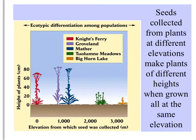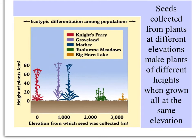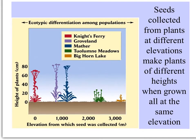If you take seeds from plants at different elevations and bring them to a common garden as Thurisen did, they make plants of different heights. On the x-axis is the elevation from which the seed was collected, with different site names shown, and when grown all together at Mather, you can see the distribution of their heights. Seeds collected from high-elevation alpine plants produce very short plants.